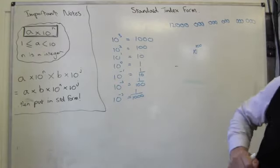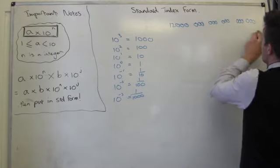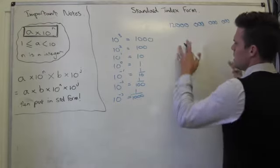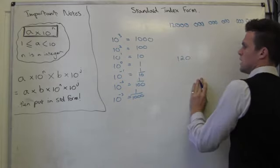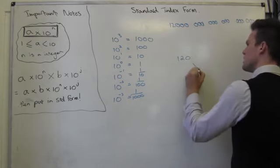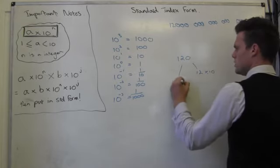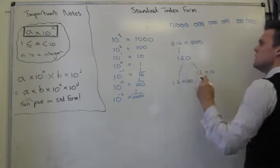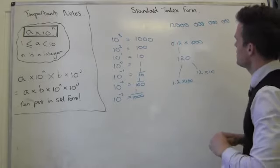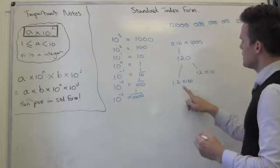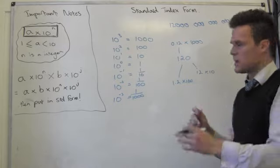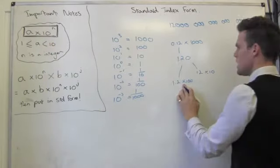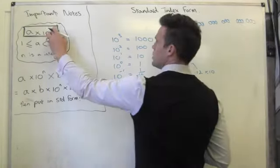What makes standard form so powerful is that I can turn these big numbers into actually quite a small expression. All I do is say, well, take the number 120 — I could write that as 12 times 10, or as 1.2 times 100, or as 0.12 times 1000. There are different ways of writing this, and what Standard Index Form says is: let's standardise this so that I have a number 'a' times a power of 10.